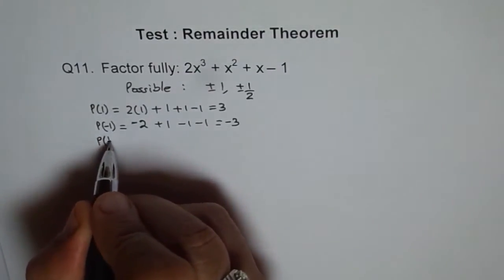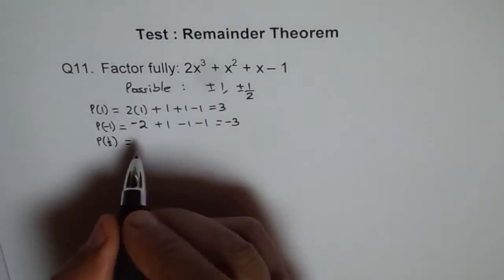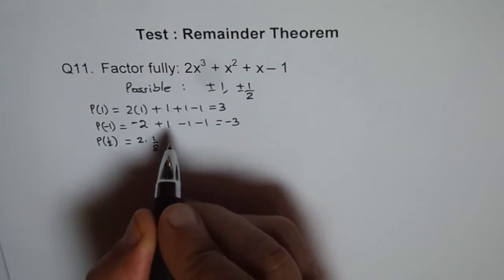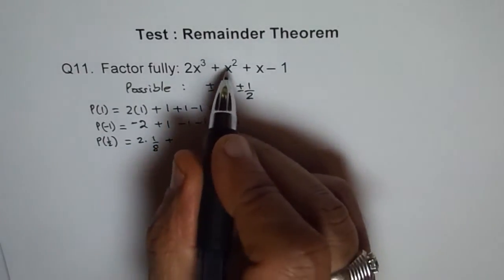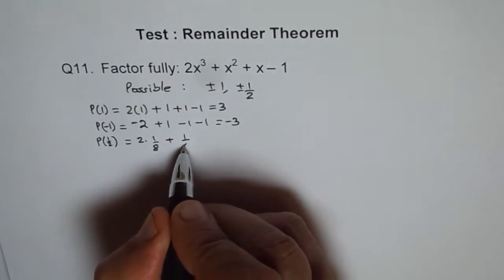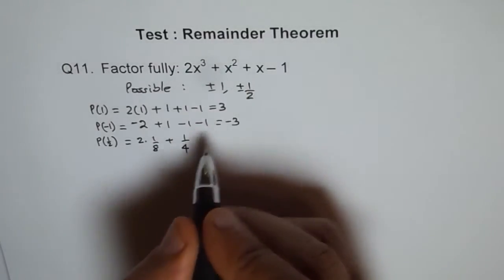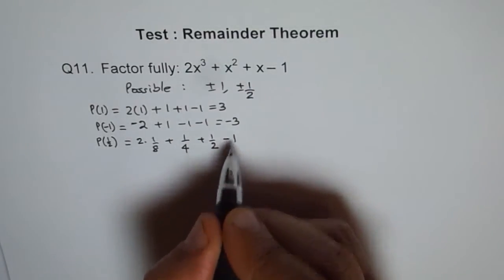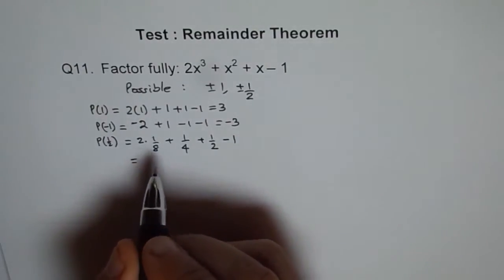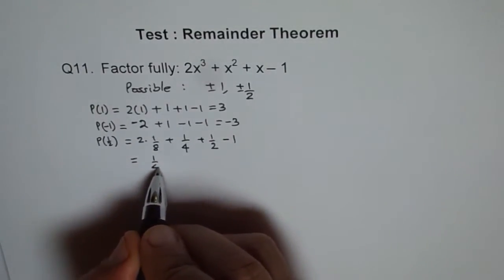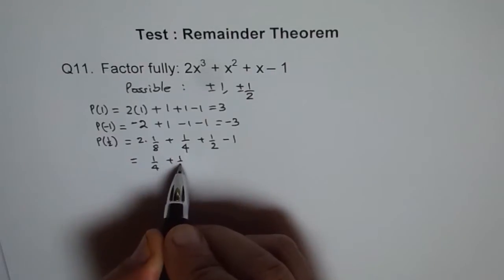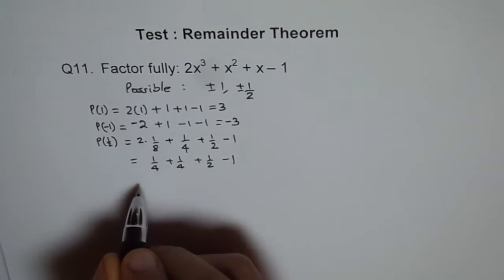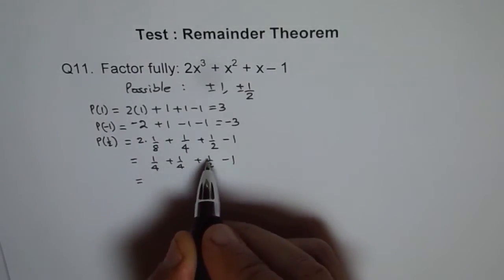So P(1/2) will give us 2 times (1/2)³, it will be 1/8, plus (1/2)² is 1/4, plus 1/2 minus 1. Let's try to figure out how much is this. So 1/4 plus 1/4 plus 1/2 minus 1.